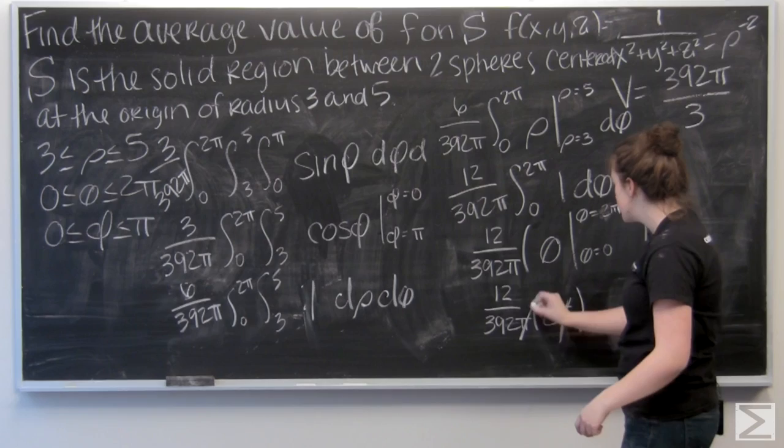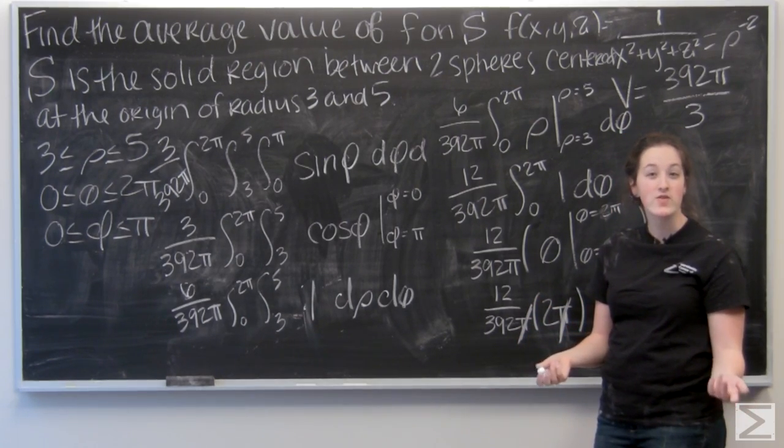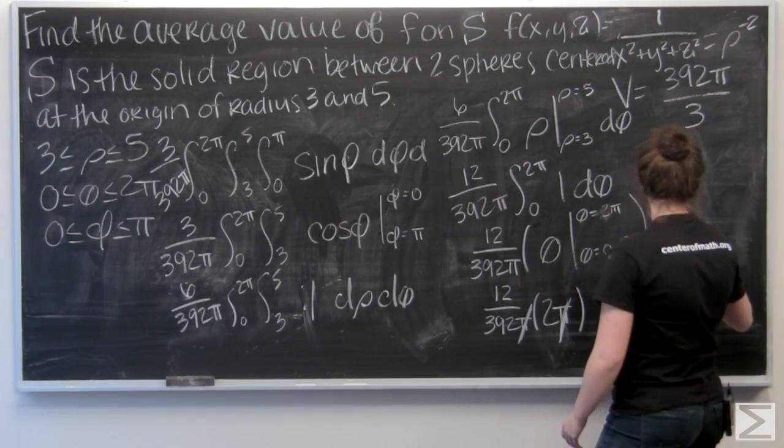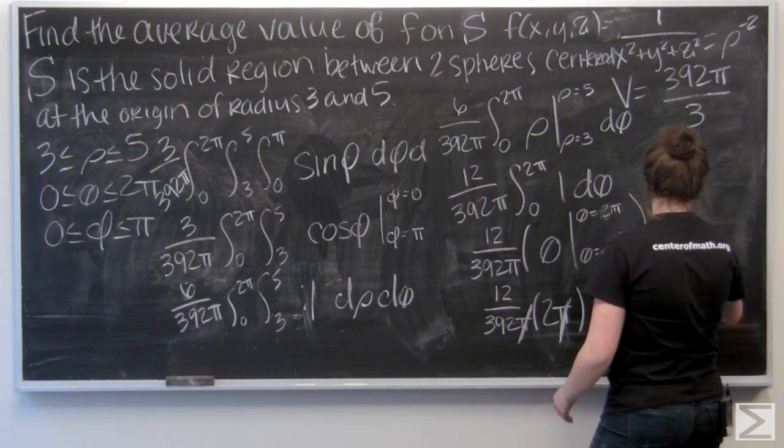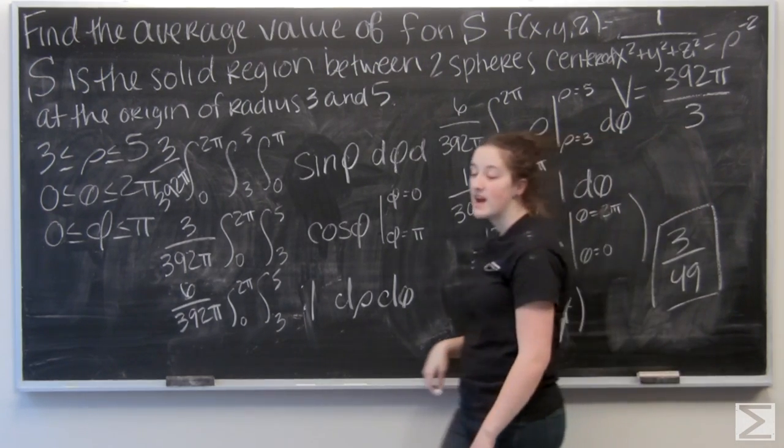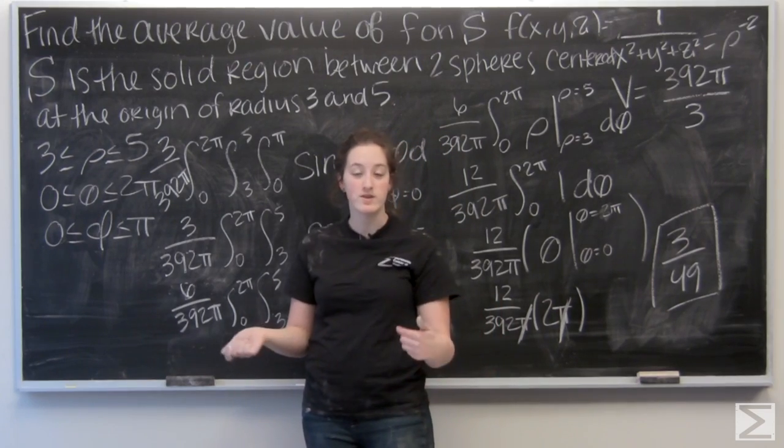So the pi's cancel out. And with the help of your calculator, you can get three over 49. Which is going to be the average value of our function over our region S. There we go.